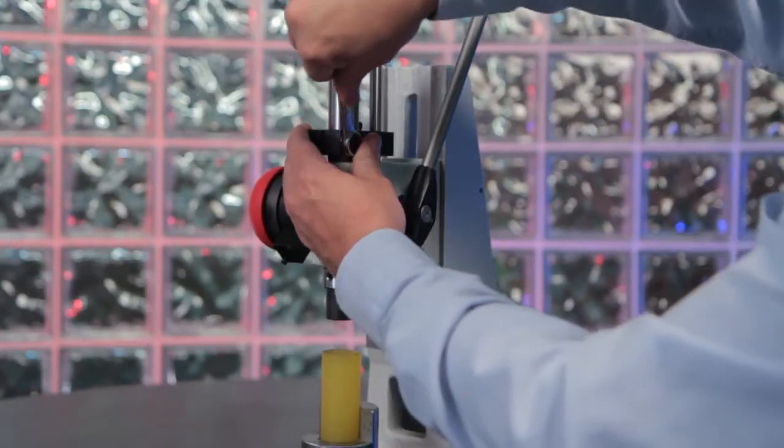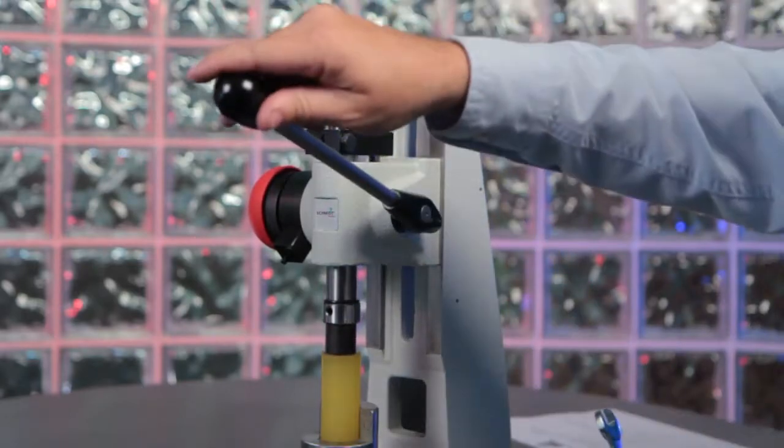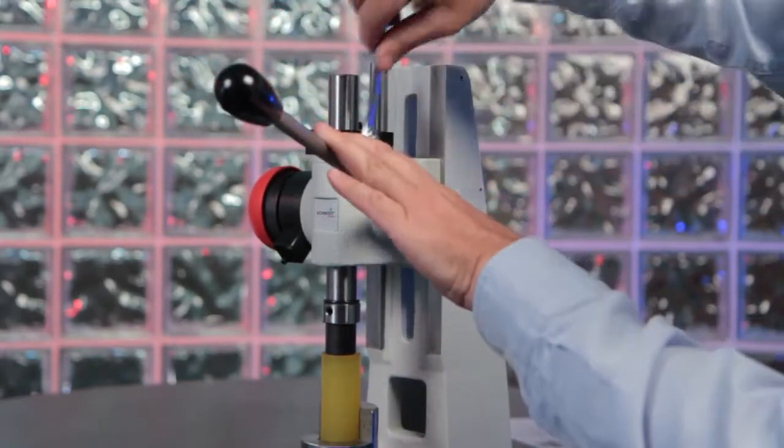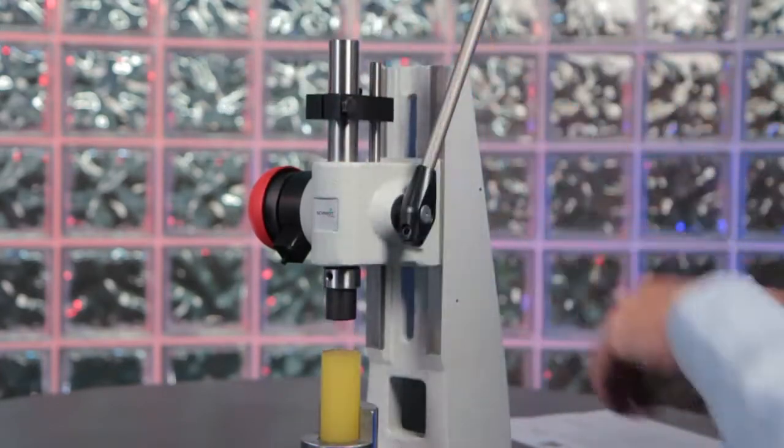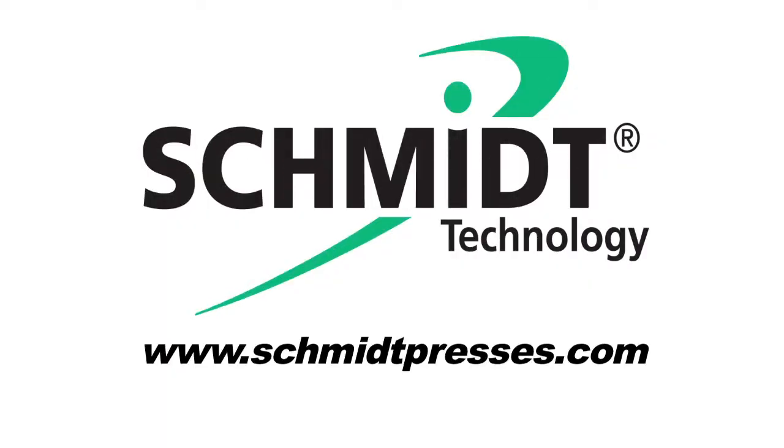On a rack and pinion press, loosen stroke limit block. Lower ram to part. Tighten the stroke limit block.